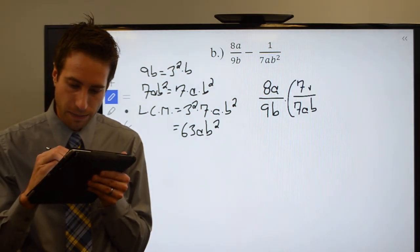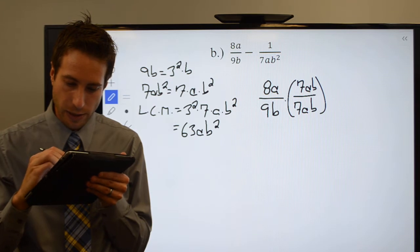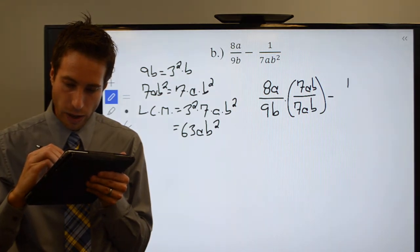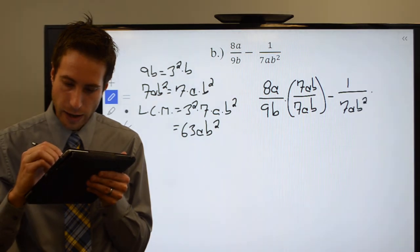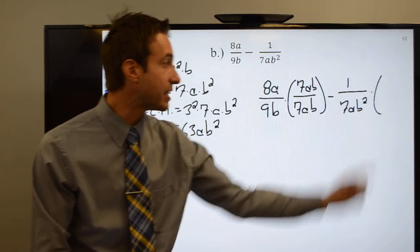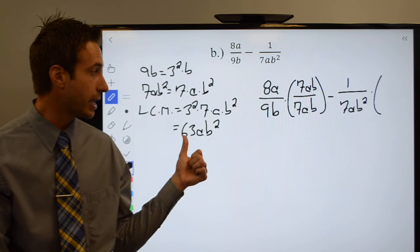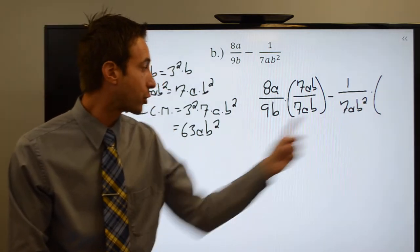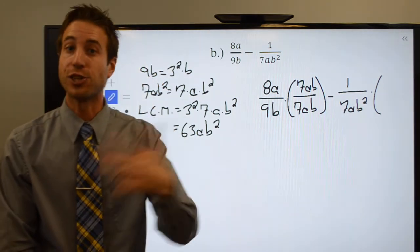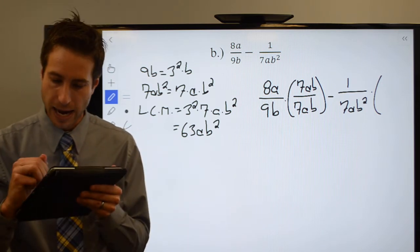And whatever I do to the bottom, algebra says I got to do to the top. Minus 1 over 7AB squared. Well I need the 7AB squared to be a 63AB squared. The AB squared is already there, so how do I turn a 7 into a 63? Multiply top and bottom by 9.